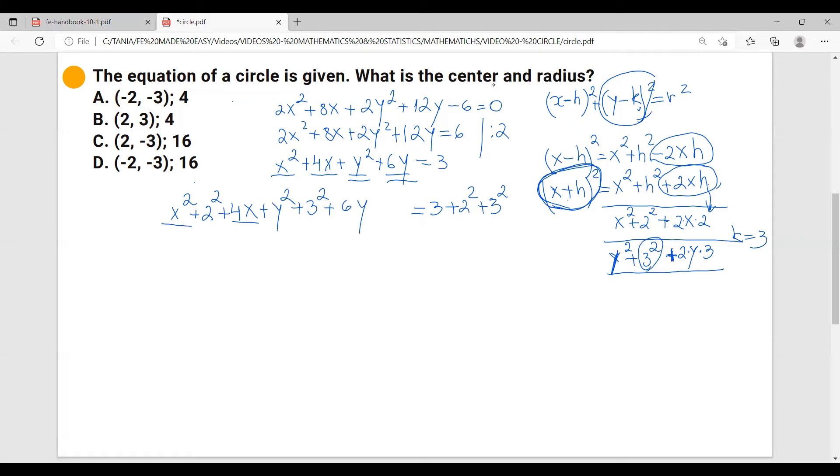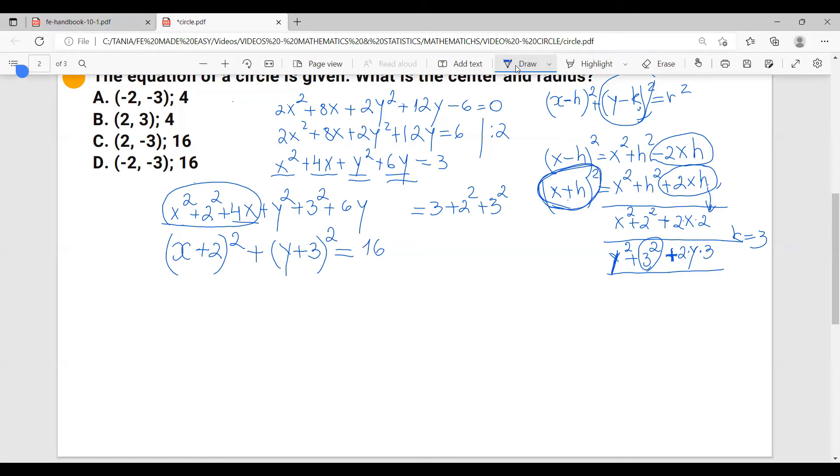And now let's form our equation. We're going to have (x + 2)² as we discussed, right, and it is plus—we already discussed that—(y + 3)². And let's see over here, we have 3 + 4 + 9 = 16. So it equals 16, but if we want to match this equation, I would write it as 4². So I'm going to write this as 4².